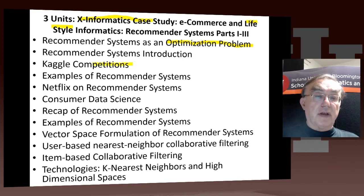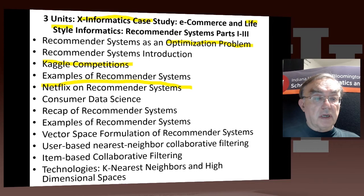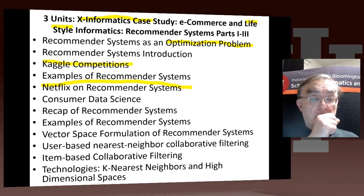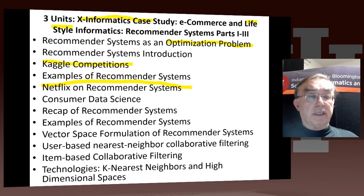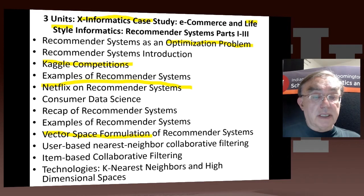We make those remarks and then go through some general issues about recommender engines — why they're interesting, including the fact that there are competitions in this field. We give examples and note that Netflix considers everything to be a recommender system. They have this concept of consumer data science driven by recommender systems. After a longish diversion on Netflix, we recap what's going on and give more examples. We note that you can set up a vector space, although it doesn't have a sensible Euclidean metric — it has its own non-Euclidean metric.